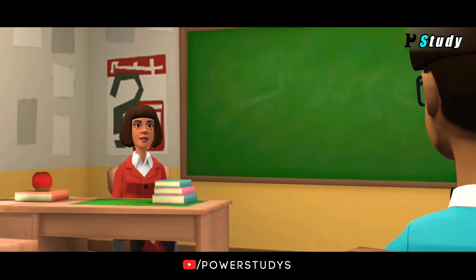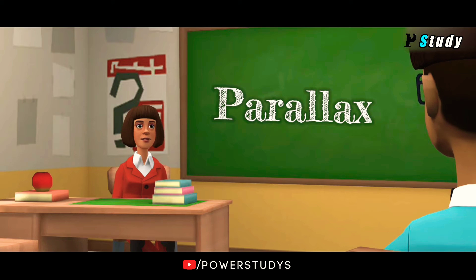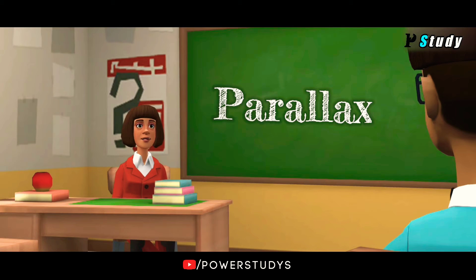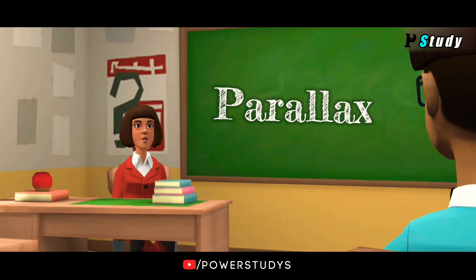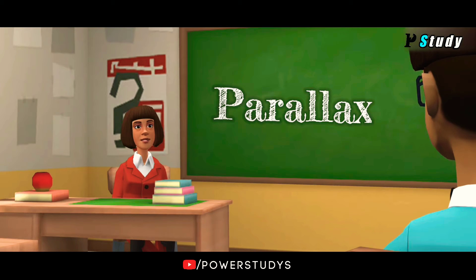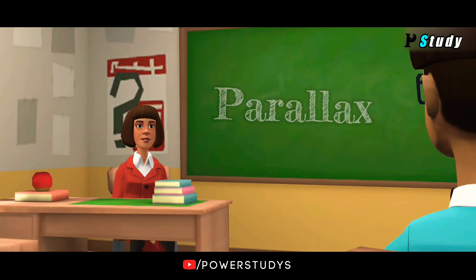Okay, Parallax. Parallax is a displacement or difference in the apparent position of an object, viewed along two different lines of sight, and is measured by the angle or semi-angle of inclination between those two lines. Due to foreshortening, nearby objects show a larger parallax than farther objects. When observed from different positions, parallax can be used to determine distances.